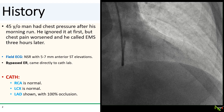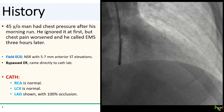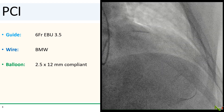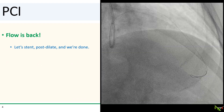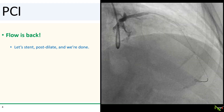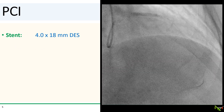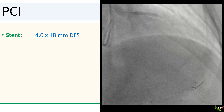On cath, both the RCA and circumflex were normal. The LAD is shown and the clear culprit is the 100% occlusion in the proximal LAD. It seems like a piece of cake. Using our EBU 3.5 guide and a BMW wire, we dilated the LAD with a 2.5 by 12 millimeter compliant balloon. We got flow back, and it looked like a fairly large vessel, so we went ahead and deployed a 4.0 by 18 millimeter DES.